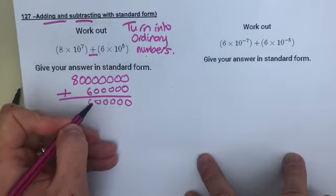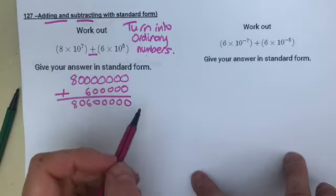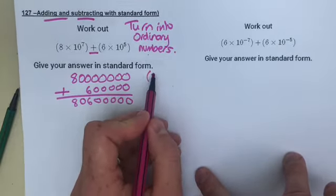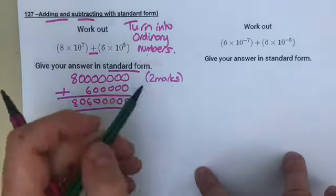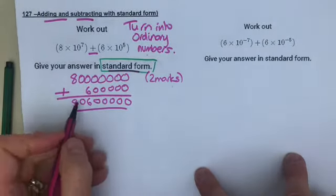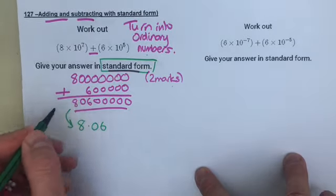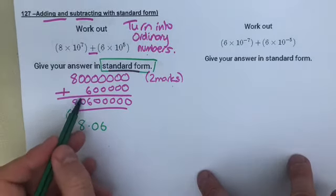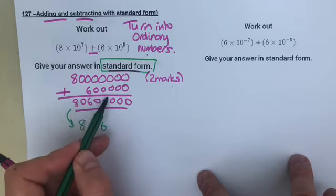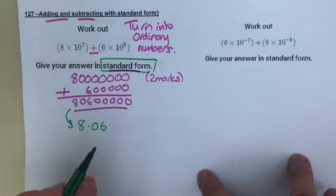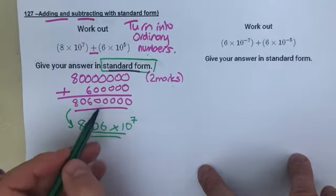So that gives 80,600,000 - that's those two added together. These are normally two marks at GCSE: first mark for adding them and getting a number, and the second mark for putting it into standard form. So turning this to standard form: 8.06, because you want a number between 1 and 10, times 10 to the power of 7. Remember the power is positive because it's a big number.